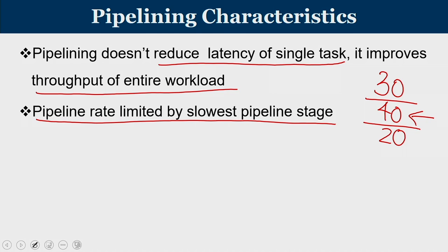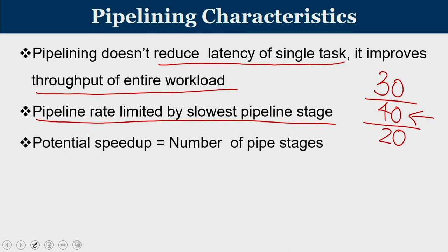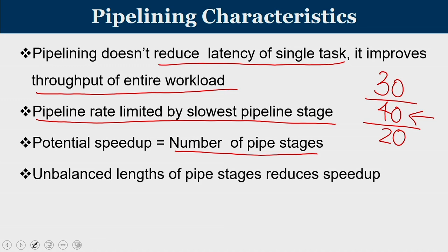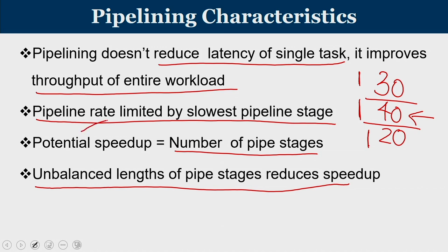The speed-up from a pipeline equals the number of stages — here 3 stages, so roughly 3× speed-up. An unbalanced pipeline causes performance issues; for example, stages of 10, 100, and 20 units mean new tasks can only start every 100 units. The pipeline achieves full performance only when all stages have approximately equal latency.